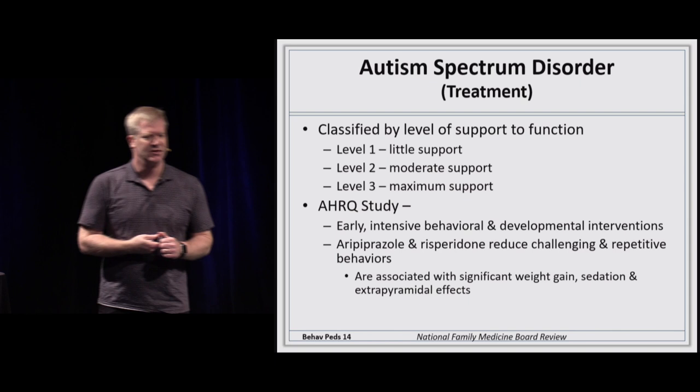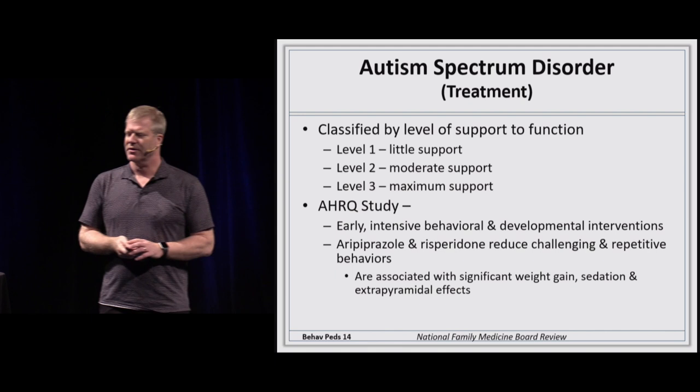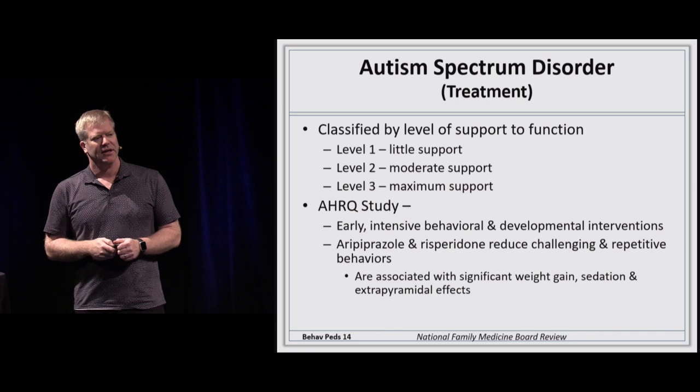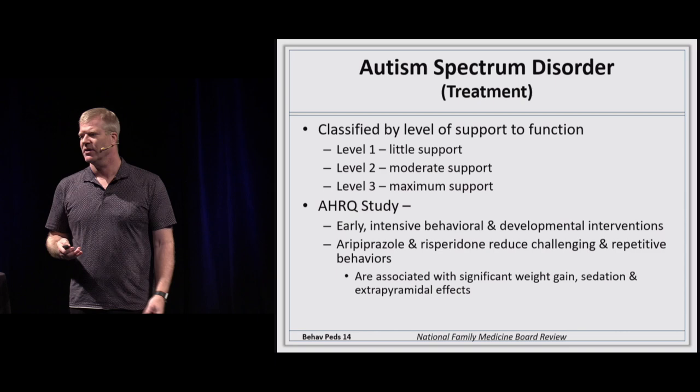Autism spectrum disorder ranges from needing a little support to needing a great deal of support. Early intervention with significant structure and behavioral modification is helpful. We try to avoid pharmacological treatment if possible due to side effects, but medications are sometimes necessary, especially for behavioral issues that can become violent.